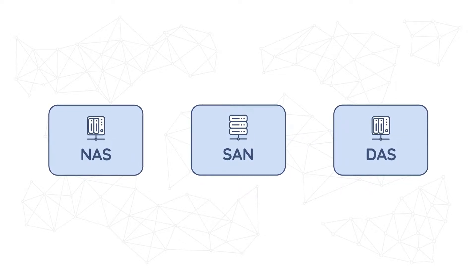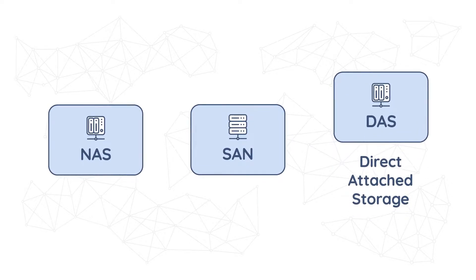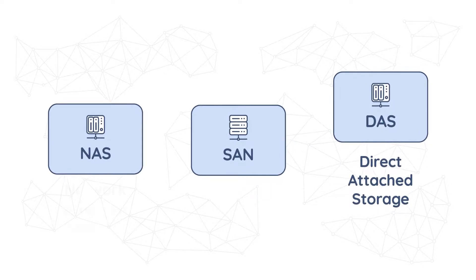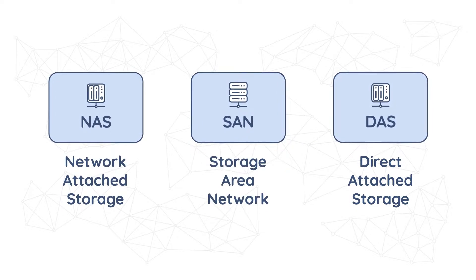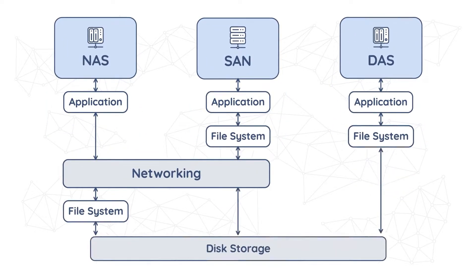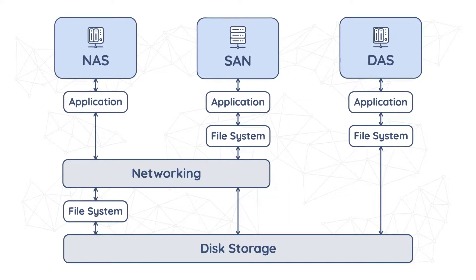There are three main approaches: Direct Attached Storage, or DAS; Network Attached Storage, or NAS; and Storage Area Network, simply SAN. The main difference is that they store data on different levels — basically on the file and block levels.